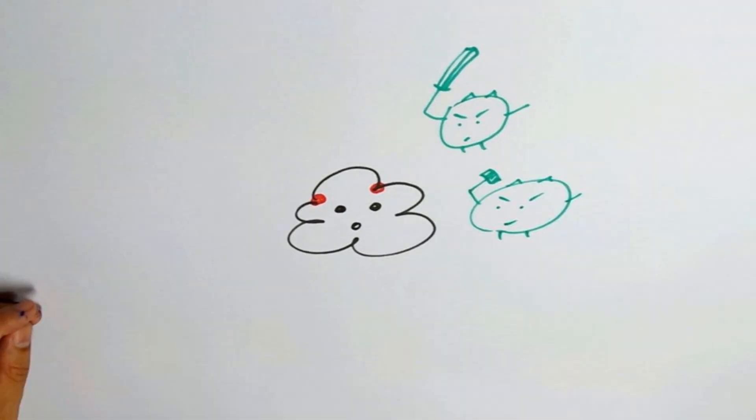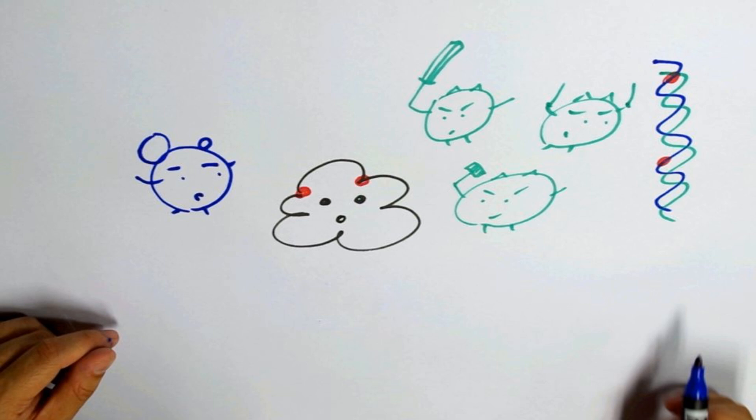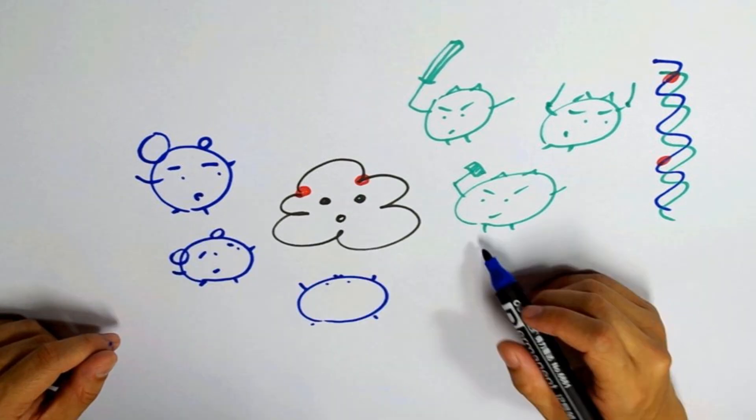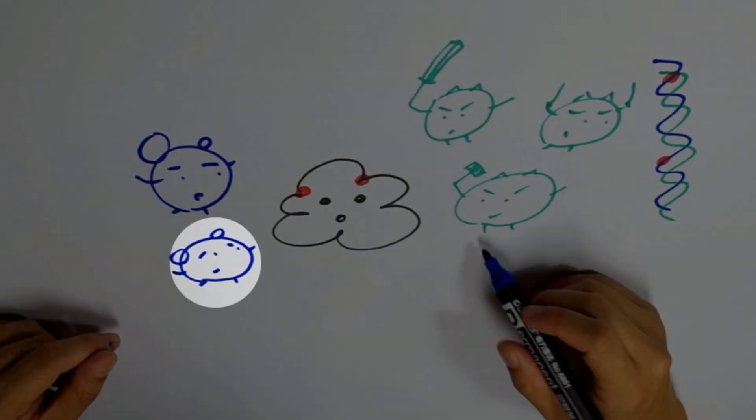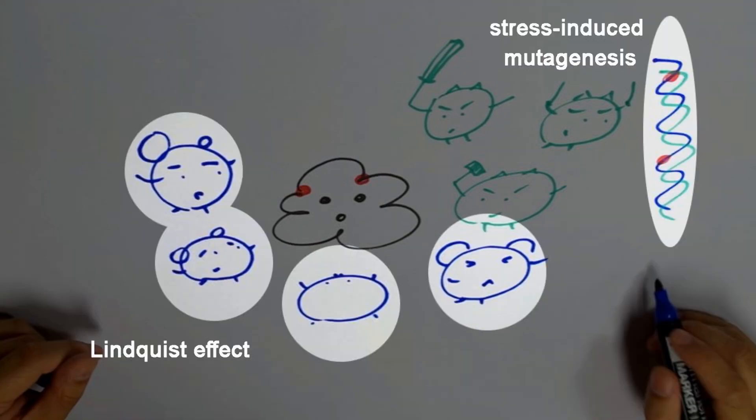Cellular stress induced by mistranslation can initiate stress-induced mutagenesis. In addition, off-regulation of cellular chaperones such as heat shock proteins can lead to adaptive phenotypes and so-called Lindquist effect. However, both of these mechanisms are indirect.